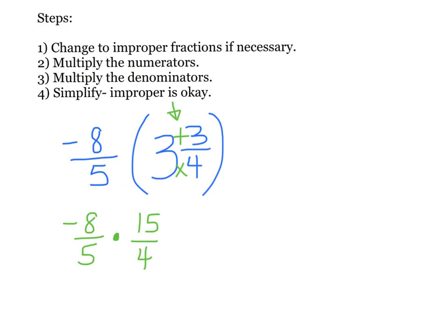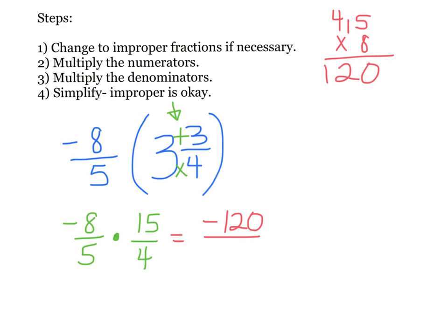My next step is to multiply straight across. On the top it says negative 8 times 15 — I know that's negative. I need to work out 15 times 8. I get 40, then 120. It was negative. And on the bottom, 5 times 4 is 20.